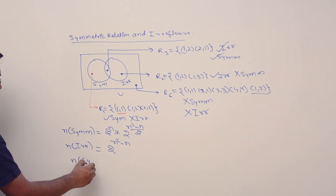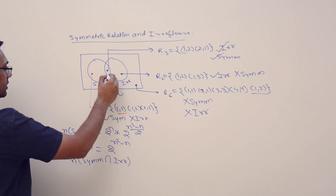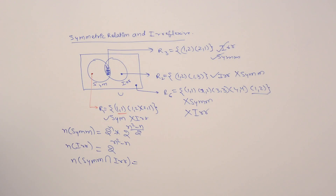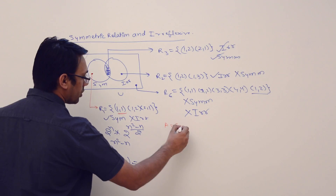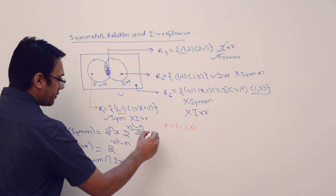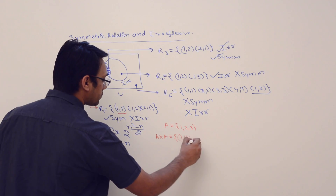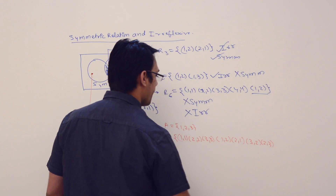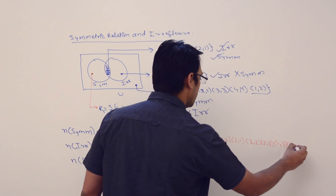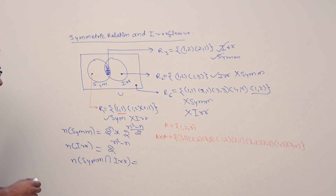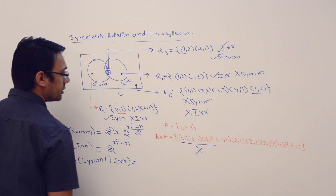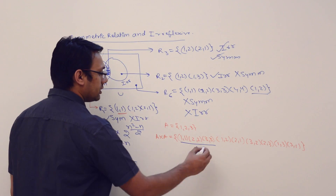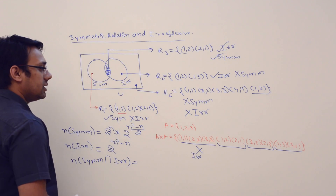Now let us find the number of relations which are symmetric as well as irreflexive. Assume A = {1, 2, 3}. Then A × A gives us: (1,1), (2,2), (3,3), (1,2), (2,1), (3,2), (2,3), (1,3), (3,1). For a relation to be irreflexive, the diagonal pairs (1,1), (2,2), (3,3) must not be included. For a relation to be symmetric, the off-diagonal pairs must appear together.